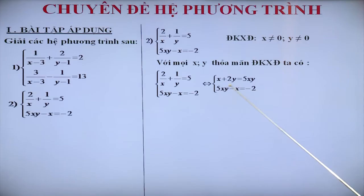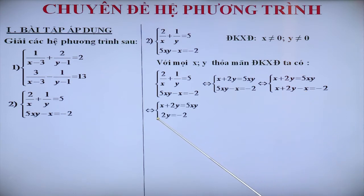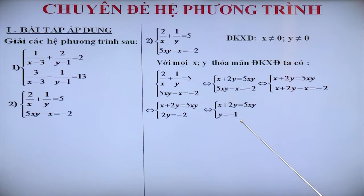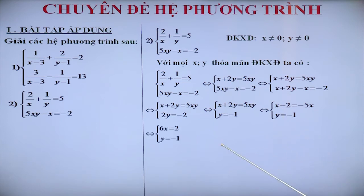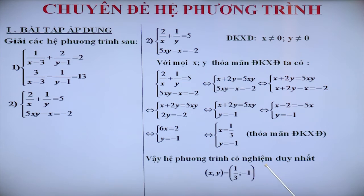Quan sát 2 phương trình của hệ, chúng ta thấy 5xy có mặt trong cả 2 phương trình. Bằng cách thế 5xy = x cộng 2y từ phương trình thứ nhất vào phương trình thứ hai, chúng ta thu được hệ mới. Hệ này có phương trình thứ hai chỉ là phương trình bậc nhất. Đặc biệt hơn, thu gọn đi, chúng ta sẽ có phương trình một ẩn. Giải phương trình này, ta tìm được y bằng âm 1. Tiếp tục thay thế giá trị y = âm 1 vào phương trình thứ nhất, chúng ta tìm được x bằng 1/3. Các giá trị tìm được thỏa mãn điều kiện xác định, do đó chúng ta kết luận hệ phương trình có nghiệm duy nhất (x; y) = (1/3; âm 1).